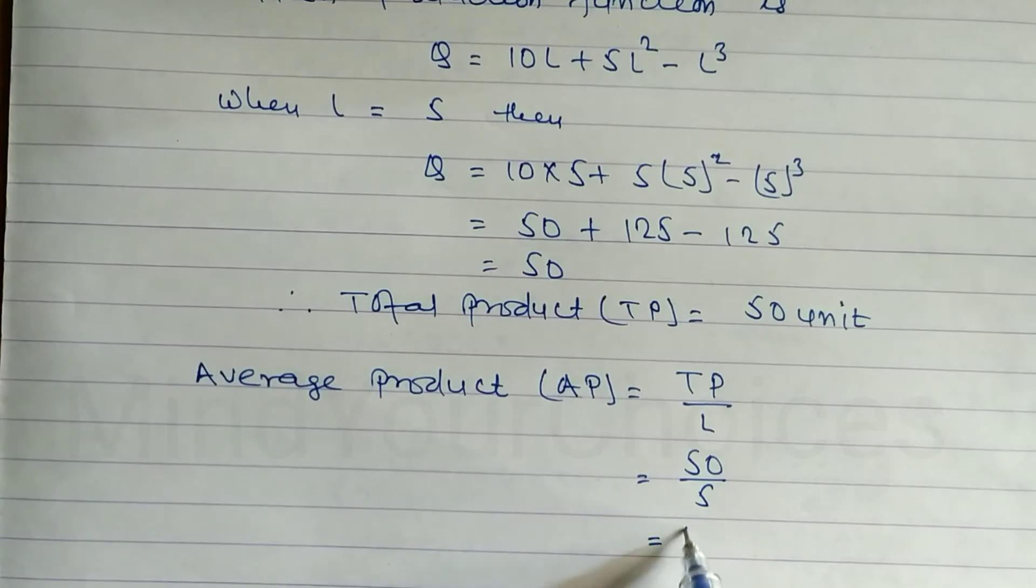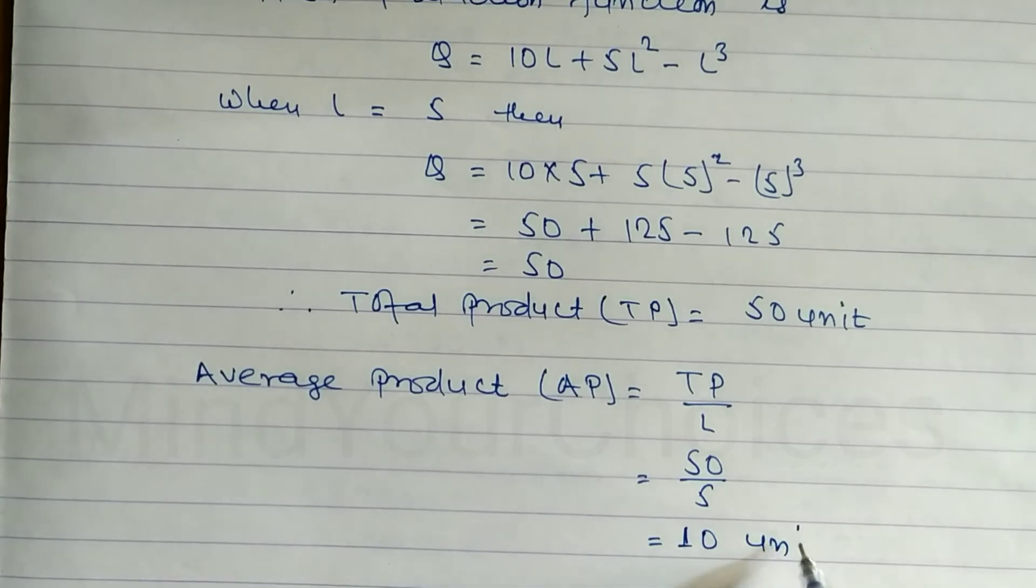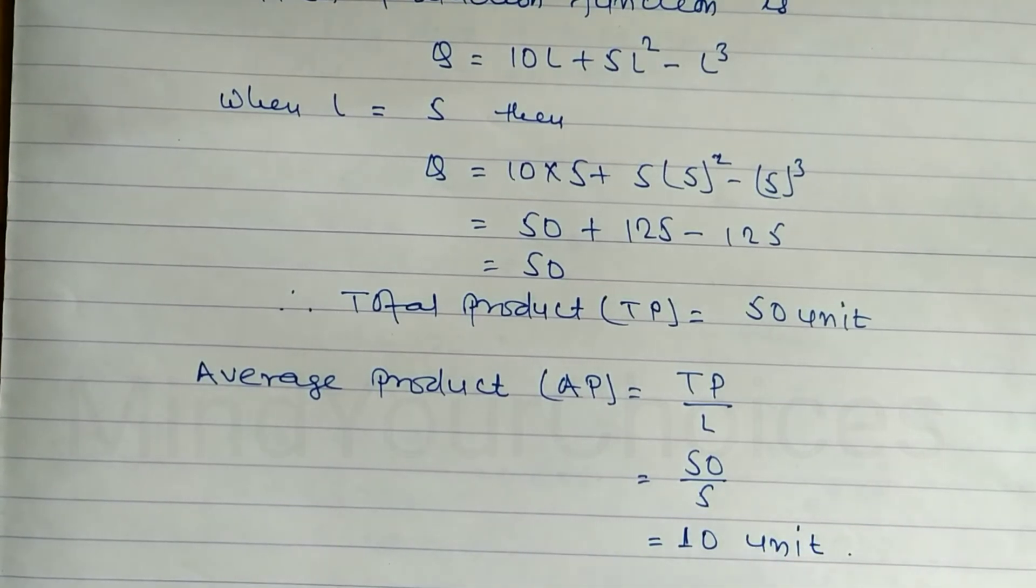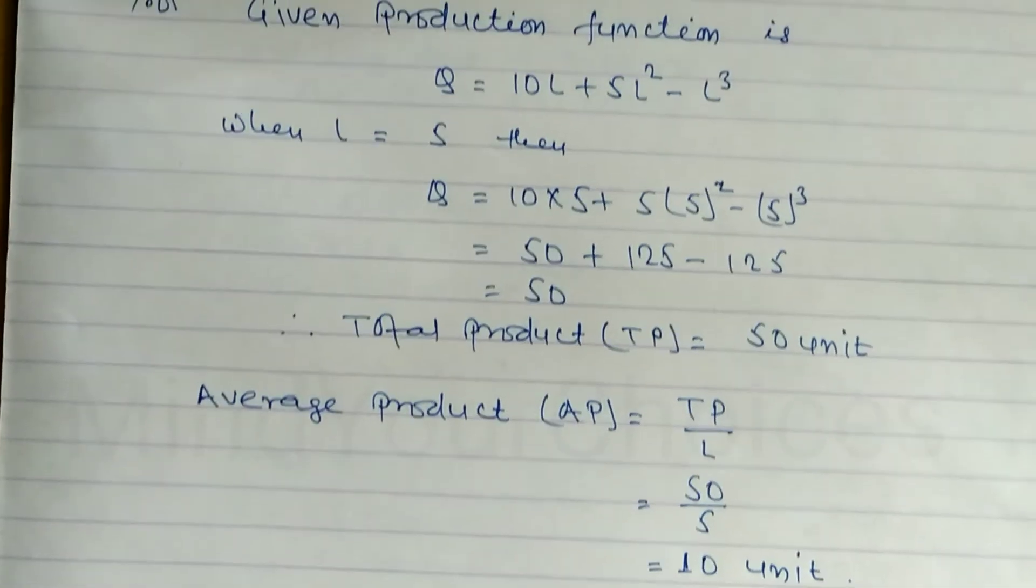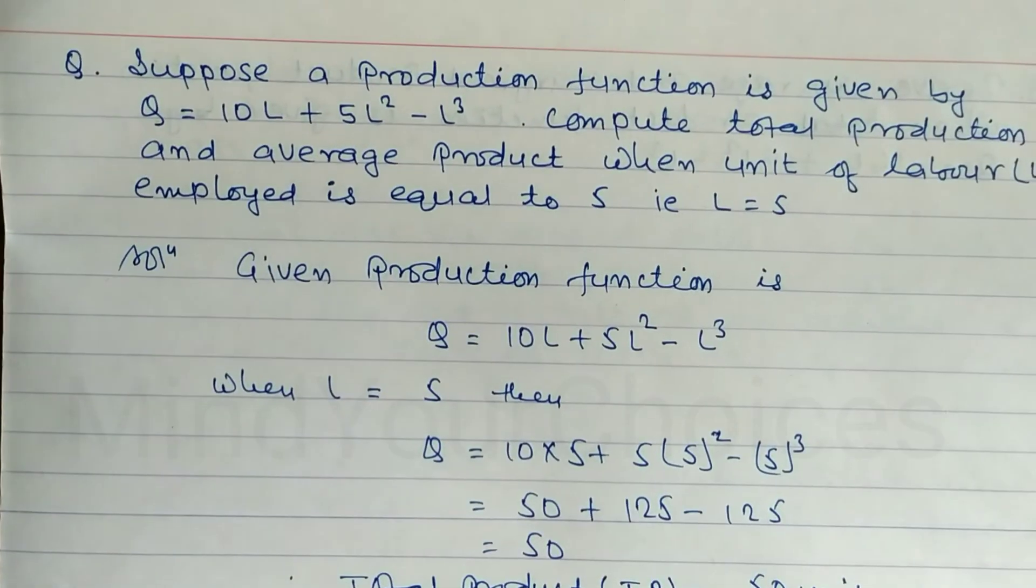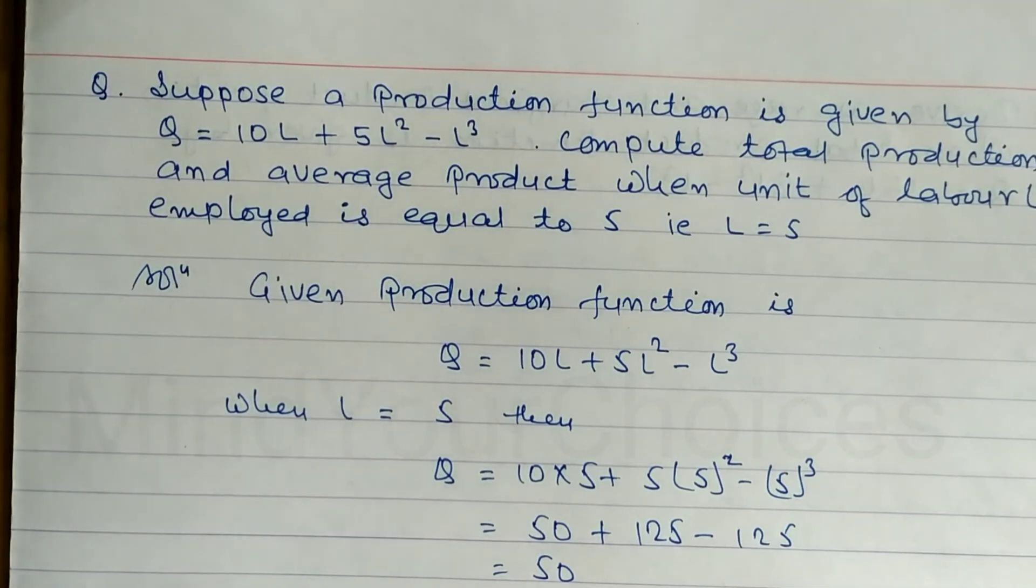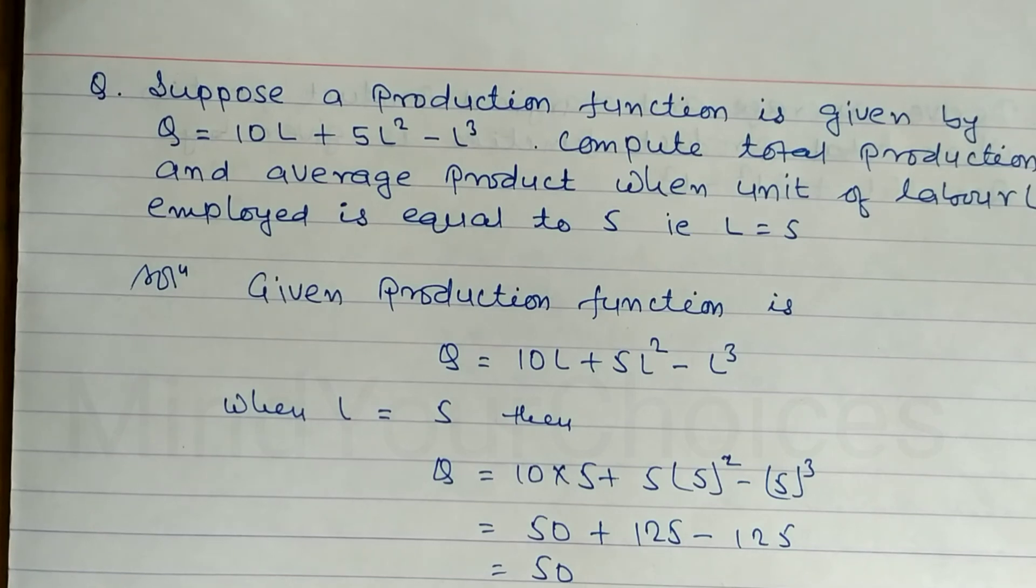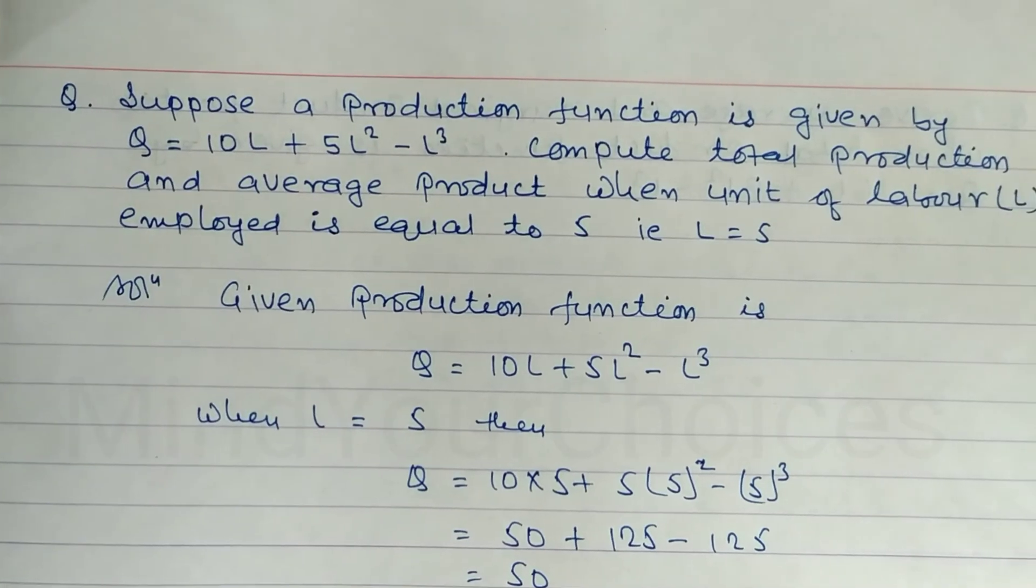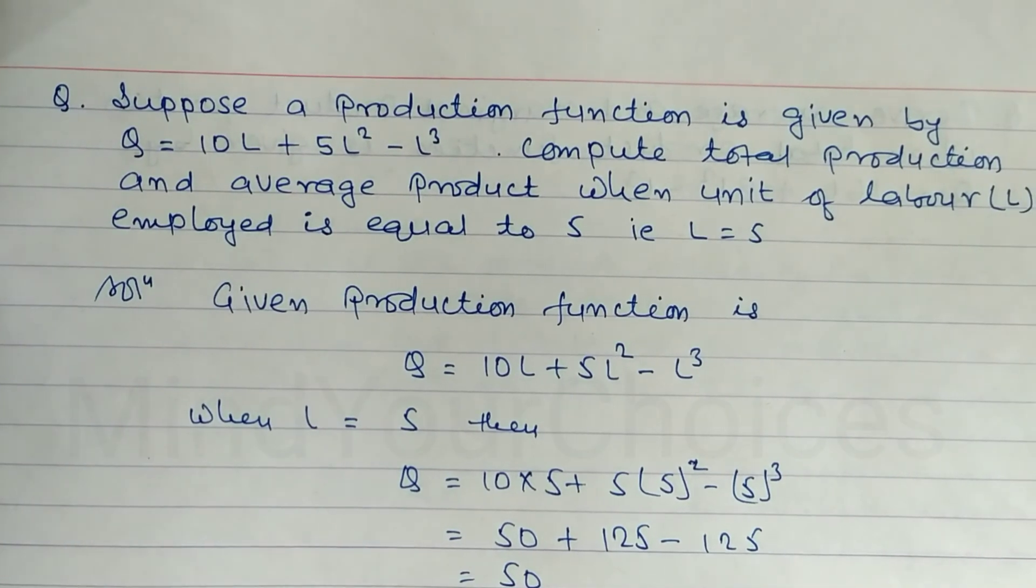So total product equals 50 and average product equals 10. This was question number 19 on theory of production. Thanks for watching till the end. Please like and subscribe.